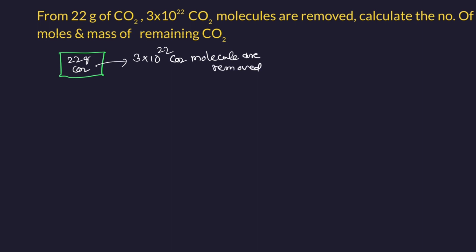Then we have to calculate the remaining number of moles and mass. So we have the formula: number of moles left equals number of moles initial minus number of moles removed.